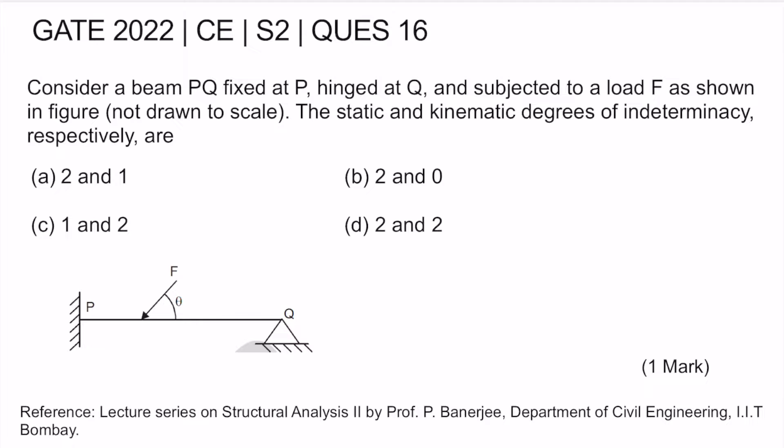Hello everyone. Today I'll be discussing question number 16 of Set 2, GATE Civil Engineering 2022. Consider a beam PQ fixed at P and hinged at Q, subjected to a load F as shown in the figure. We need to find the static and kinematic degrees of indeterminacy for this beam.